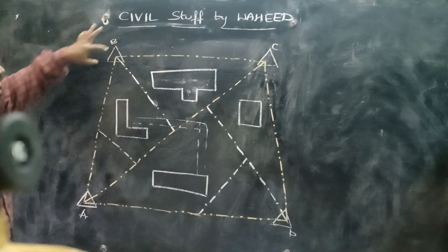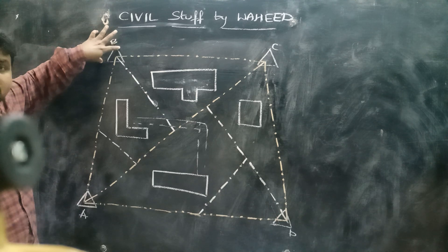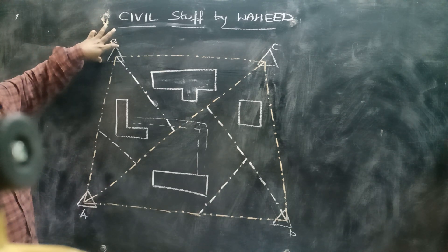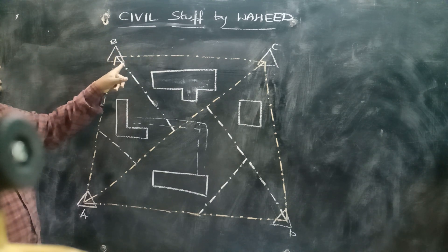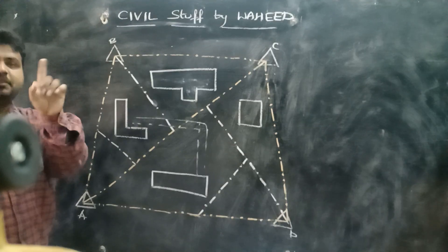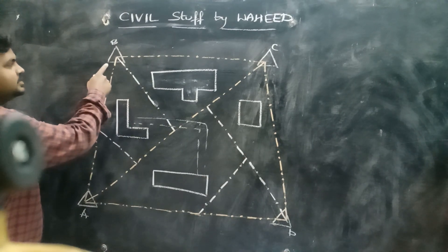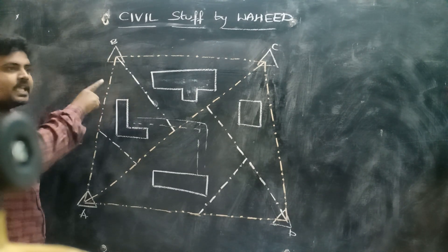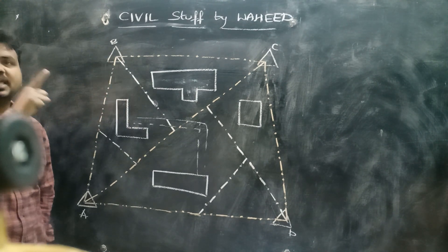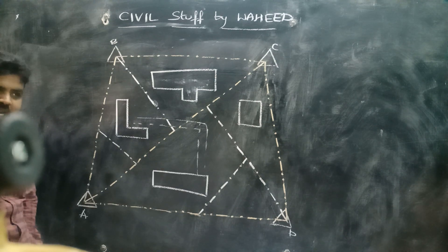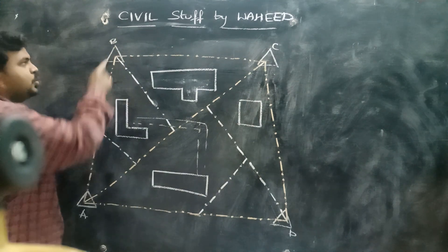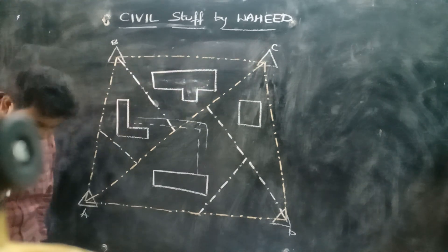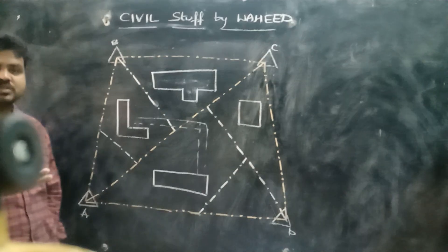These are also called as control points. Now, these main stations, while plotting, should be symbolically mentioned like a triangle. If it is a triangle, that indicates the main station. No need to write 'main station' — only the symbolic representation is a must in your maps.